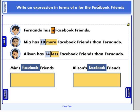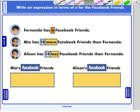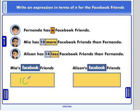So if we are going to write an expression for the number of Facebook friends that Mia has, what would you write? What would be an expression that tells us how many Facebook friends Mia has? She has 10 more than Fernando. So 10 plus n is going to tell us, or n plus 10, doesn't matter which order. If Fernando has n, Mia has 10 more than that. So we have to add 10 to whatever Fernando has.